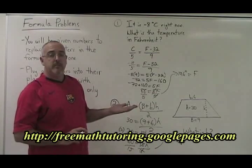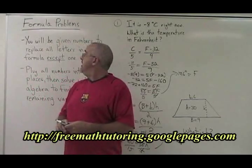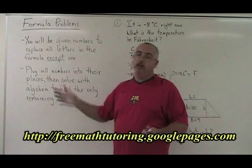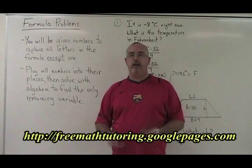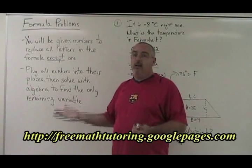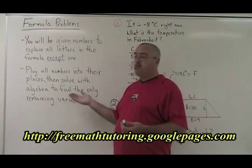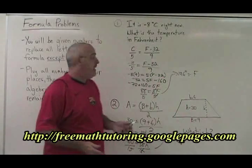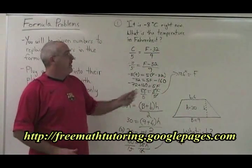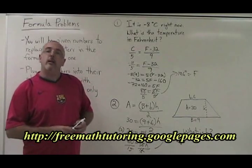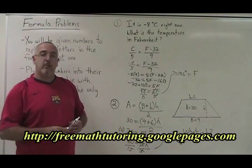This is how you do formula problems. All you have to do is replace all the letters in the formula except one, which is the unknown they are asking for, with the numbers they give you. And then use the skills of algebra we've developed in this course to simplify and isolate that variable. If there's a unit of measure, don't forget to apply it. And you have an easy 5 marks or 10 marks.